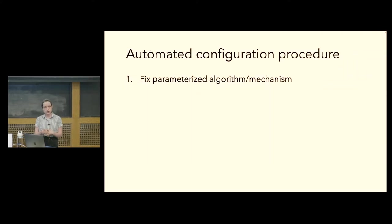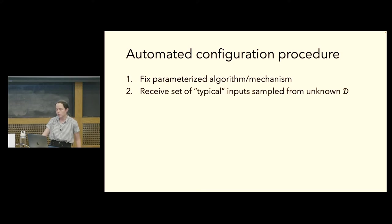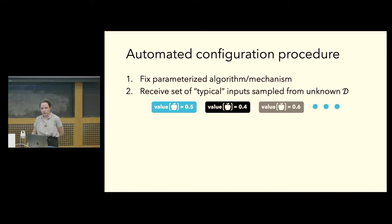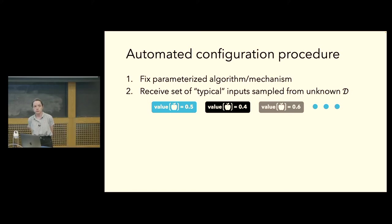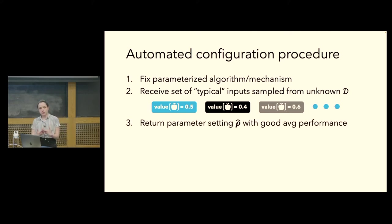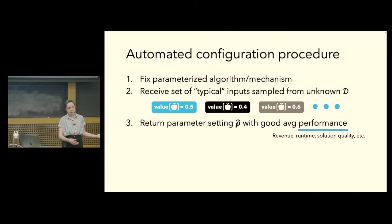So what would this automated approach to configuration look like? At a high level, we fix some parameterized algorithm or mechanism, receive a training set of typical problem instances from some unknown application-specific distribution D. In mechanism design, every input is a sample from the distribution over agents' values; in integer programming, every input is a routing integer program. We perform optimization to find a parameter setting rho-hat with good average empirical performance over the training set — good revenue in mechanism design, good runtime and solution quality in algorithm design.